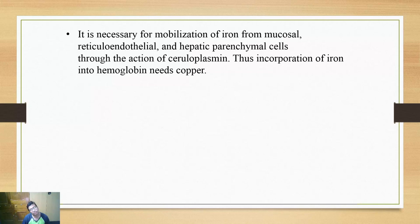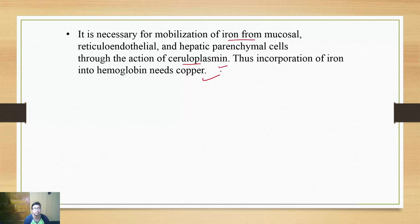The functions of copper are many. Number one is ceruloplasmin, which has ferroxidase activity. It is necessary for mobilization of iron from mucosal and RE cells and hepatic parenchymal cells. Thus, incorporation of iron into hemoglobin needs copper, so copper aids in mobilization and internalization of iron by its ferroxidase activity.